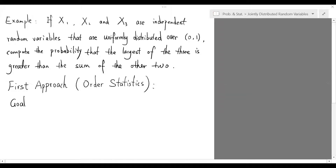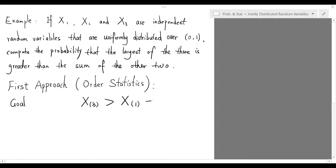In the language of order statistics, the largest value among three random variables is denoted as X sub-(3). So our goal can be written as X sub-(3) being greater than the sum of the other two order statistics, and we are looking for the probability of this event.